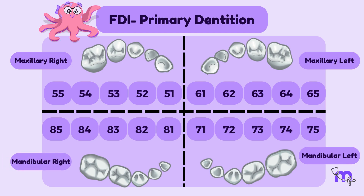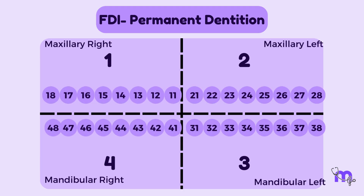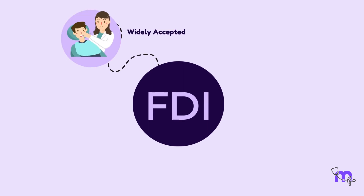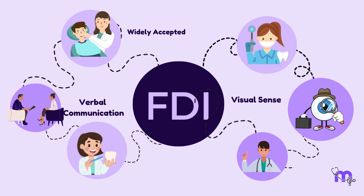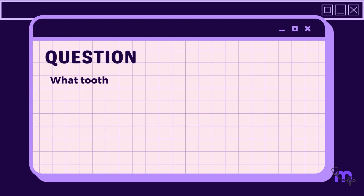In the primary dentition, the quadrants are numbered five to eight in a clockwise manner: maxillary right, maxillary left, mandibular left, and mandibular right quadrants. The teeth in each quadrant are numbered one to five starting from the midline. For instance, the number 51 corresponds to the deciduous maxillary right central incisor. In the permanent dentition, the quadrants are indicated by numbers one to four, and the teeth in each quadrant are numbered from one to eight. The FDI system is the most widely accepted system worldwide.